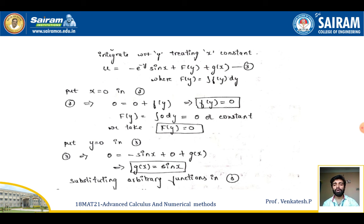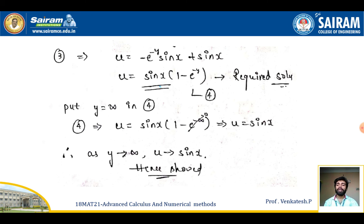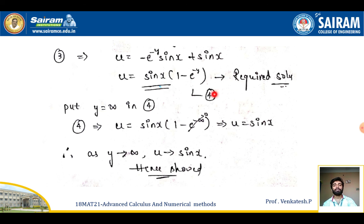Substituting all values, u = −e^(−y)sinx + sinx = sinx(1 − e^(−y)). This is the required solution. As y tends to infinity, e^(−y) tends to 0, so u tends to sinx, which is what was required to show.